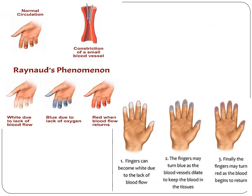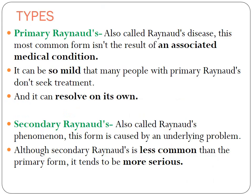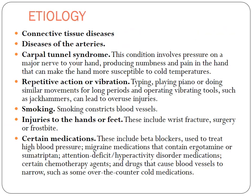The next topic is Raynaud's disease. The fingers can turn red and become white due to the lack of blood flow, turn blue when the blood vessels dilate and there is a lack of oxygen, and finally the fingers may turn red as the blood begins to return. You will see these three phases, relating to constriction of the blood vessels. Types include primary and secondary. Primary can be mild and resolve on its own with perhaps mild medical management, while secondary is less common but can be more serious and requires effective medical management.